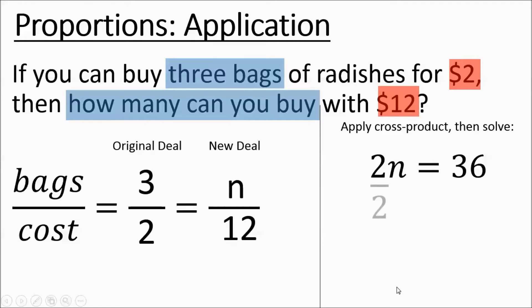From there you're going to divide out the 2 and you get 18. You can get 18 bags of radishes for $12. That's a lot of radishes, hope you like them.